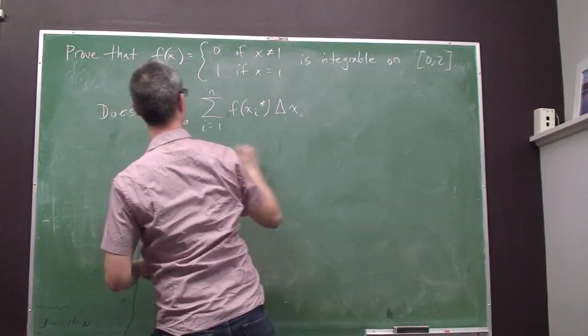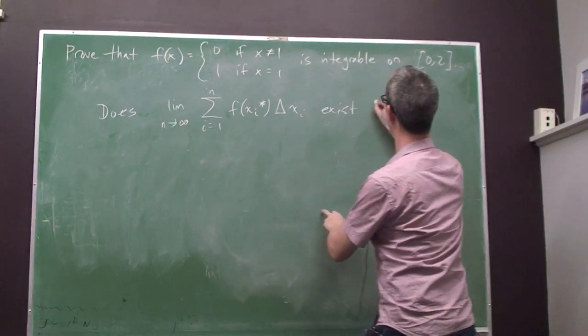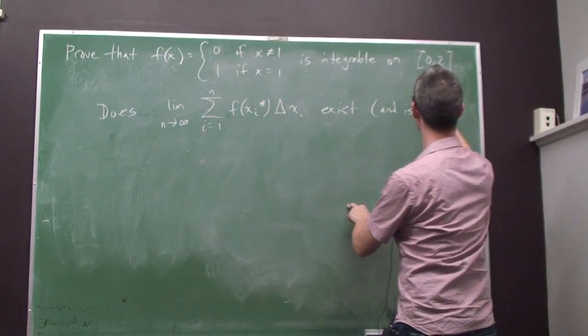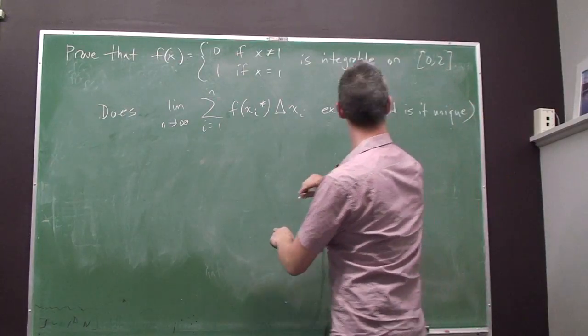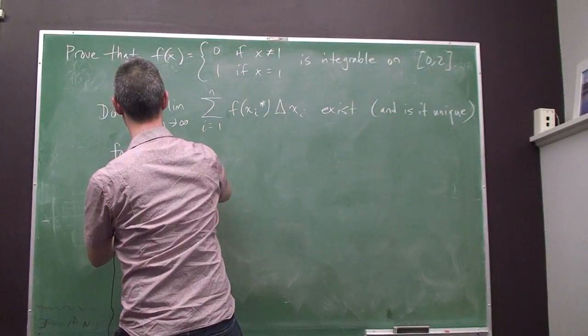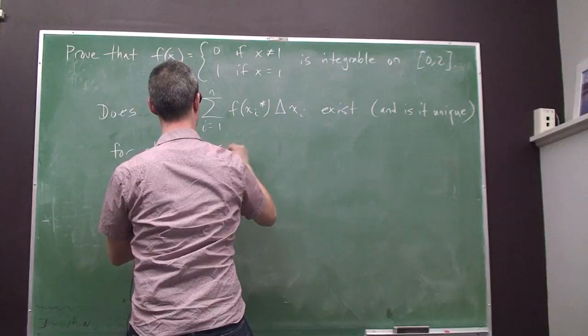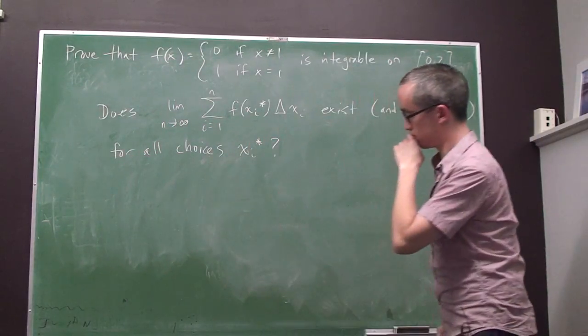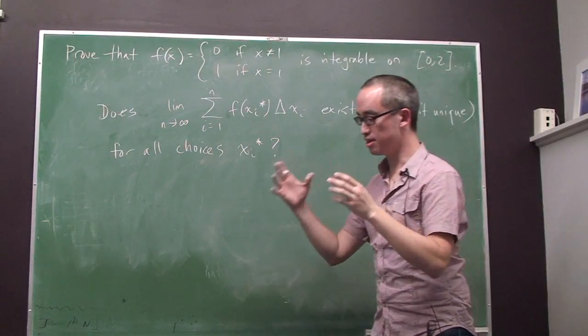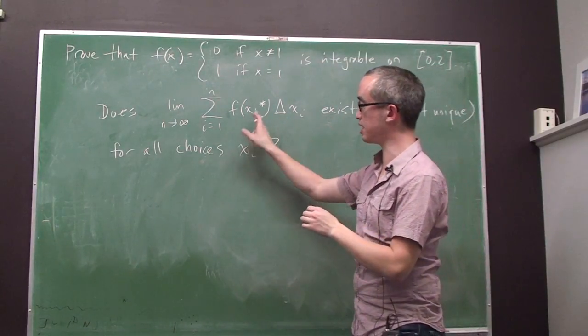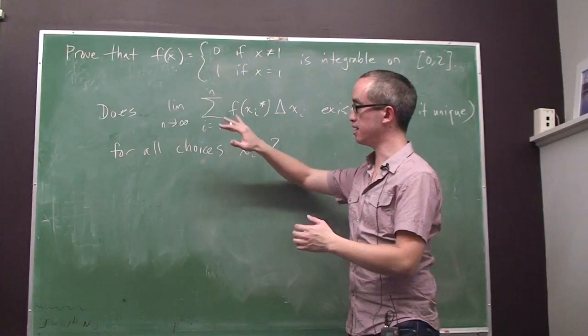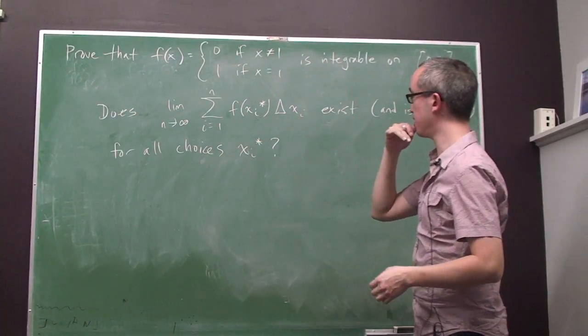So does this limit exist? And is it unique for all choices xi star? As we take the limit as the number of subintervals increases, no matter how we pick the sample points inside each of the subintervals, does this limit exist, and is it the same every time?